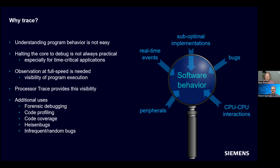Then there are Heisen bugs — the types of bugs that disappear when attempts are made to study them. These are typically due to invasive debugging techniques such as code instrumentation or printf statements, which make subtle changes to the execution of the code, causing the bug to disappear. Processor Trace is non-intrusive, so those kinds of bugs can be monitored. The final category is infrequent or random bugs, where it can take hours or even days before the bug shows itself. Having the ability to record the sequence of events in a circular buffer, allowing you to look back and see what caused those problems, is very valuable.